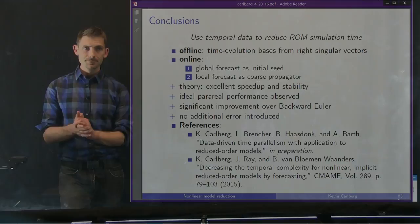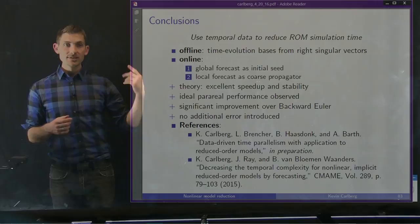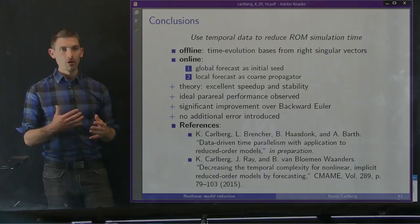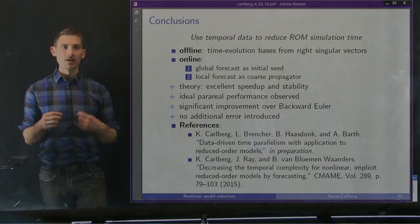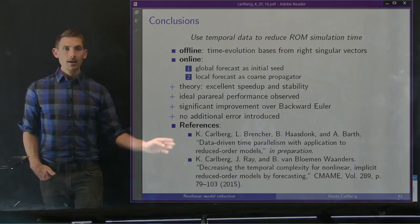In conclusion, we use temporal data to reduce the ROM simulation time. Offline, we obtain time evolution bases for free from the right singular vectors. Online, we recommend using the global forecast as an initial seed and the local forecast as a coarse propagator. Theoretical results imply very good stability and speedup. We observed ideal parareal performance in practice and a huge improvement over the standard backward Euler method for both the coarse propagator and initialization, with no additional error introduced — it's purely an acceleration mechanism. We have a prior paper on the initial guess approach, and a paper on the time-parallel variant is forthcoming.